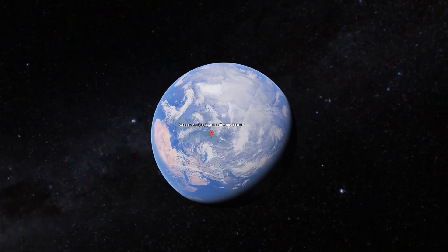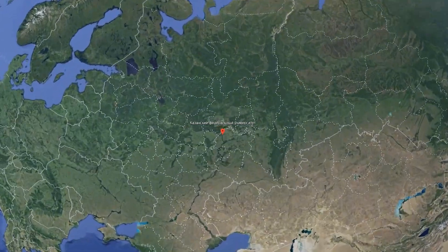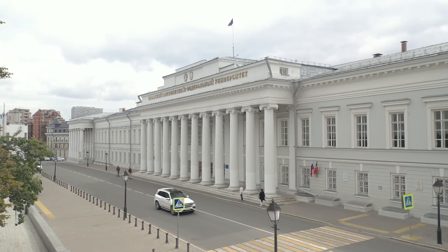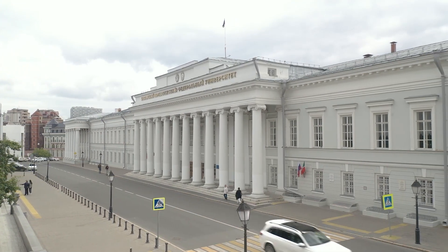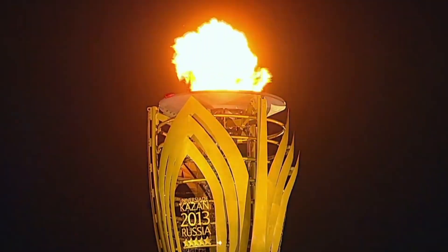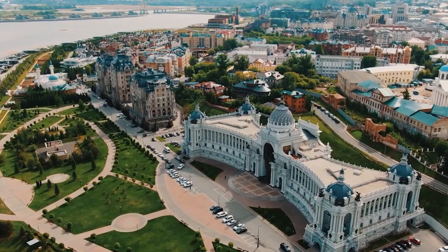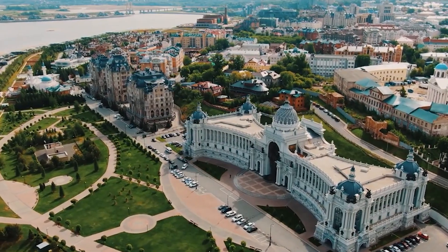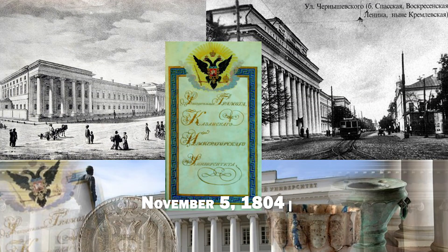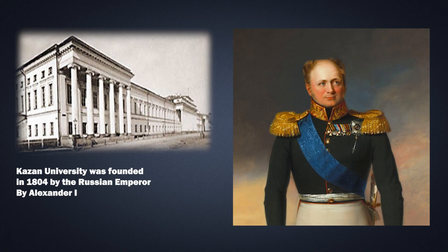Kazan Federal University is one of the oldest universities in Russia. It is located in a city with a thousand-year history – Kazan, 800 kilometers east of Moscow. Kazan University was founded in 1804 by the Emperor Alexander I.